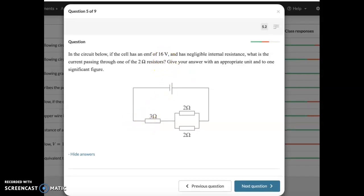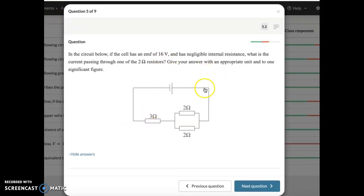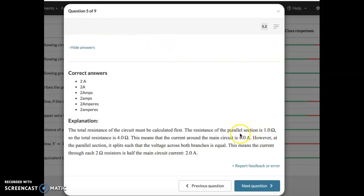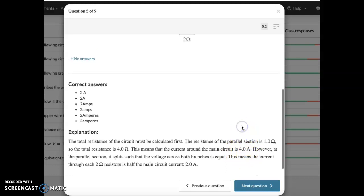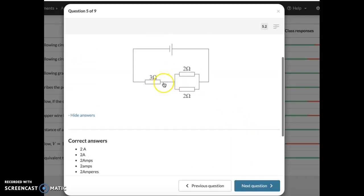And now, we have 16 volts. Current equals voltage over resistance. So 16 divided by 4 is 4 amps. And if we go back to the circuit, if you've got 4 amps going here, then it splits into 2. You've got 2 that way and 2 that way. So it's 2 amps each.